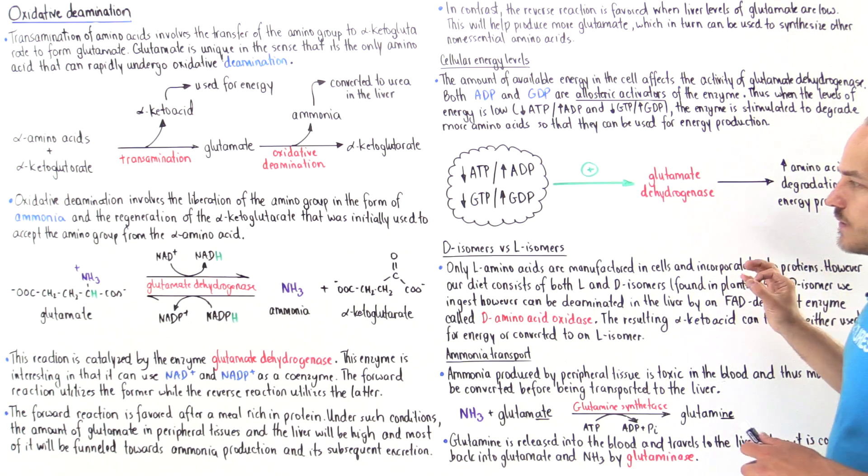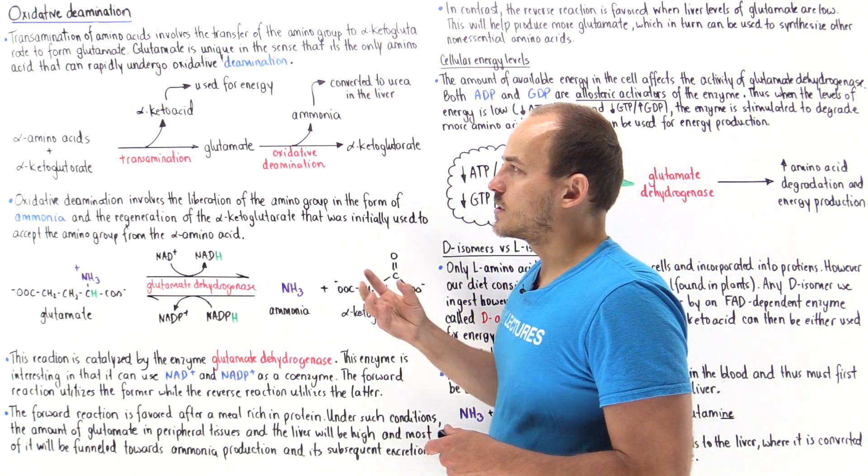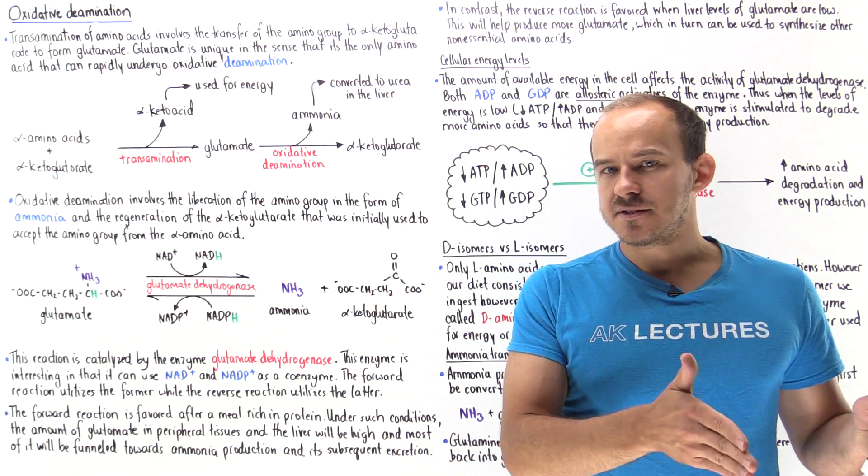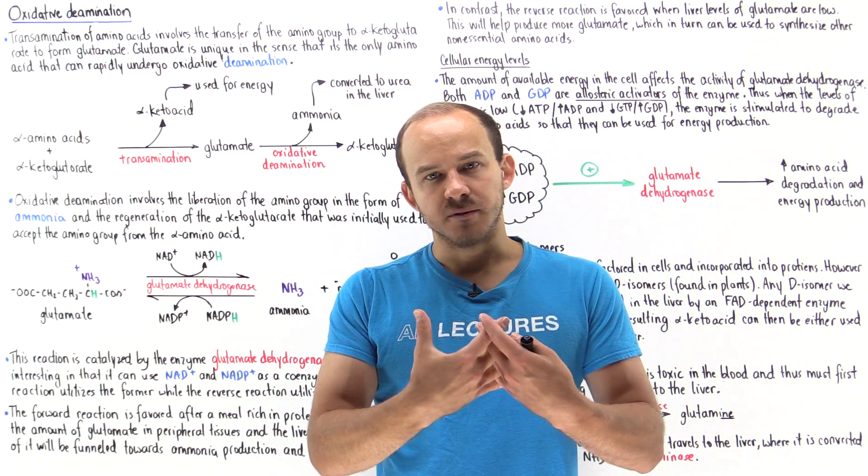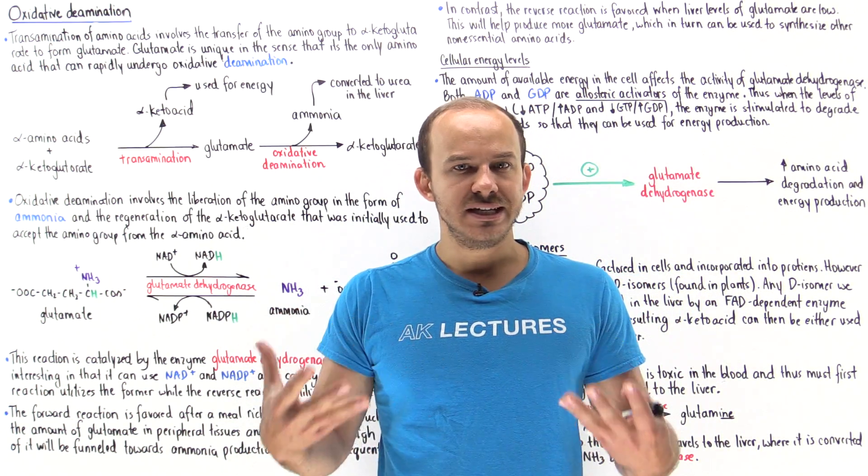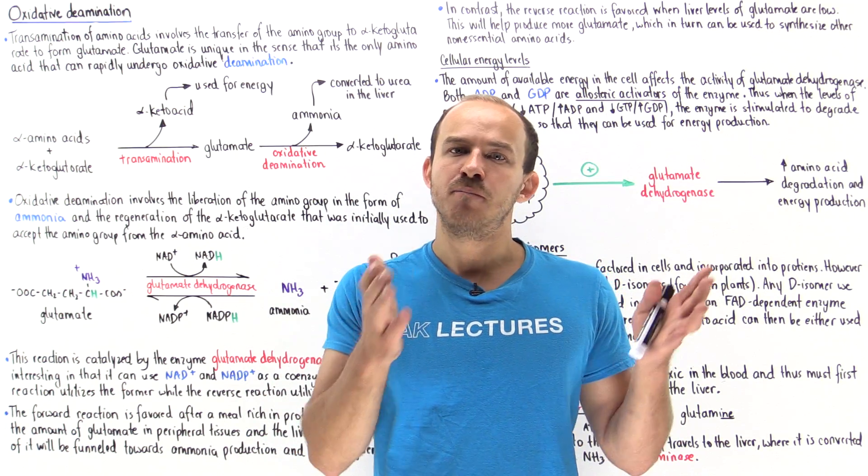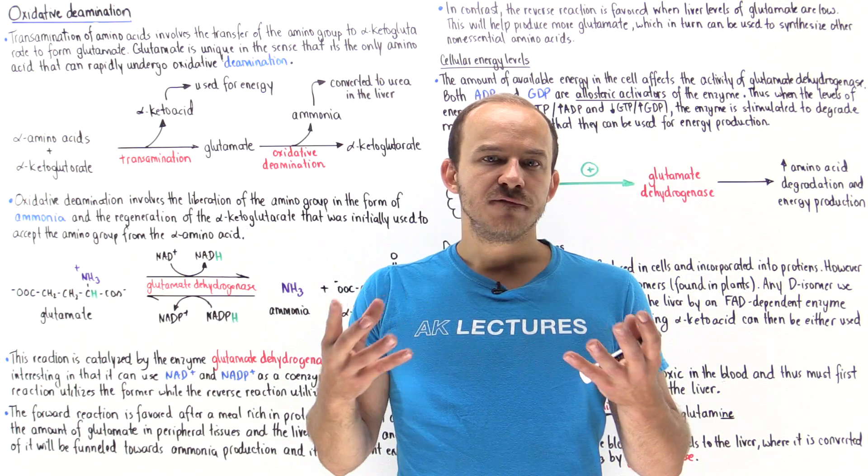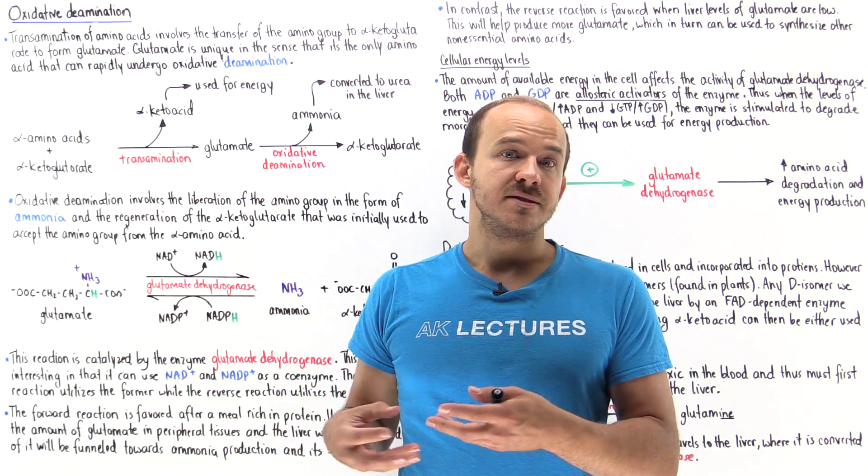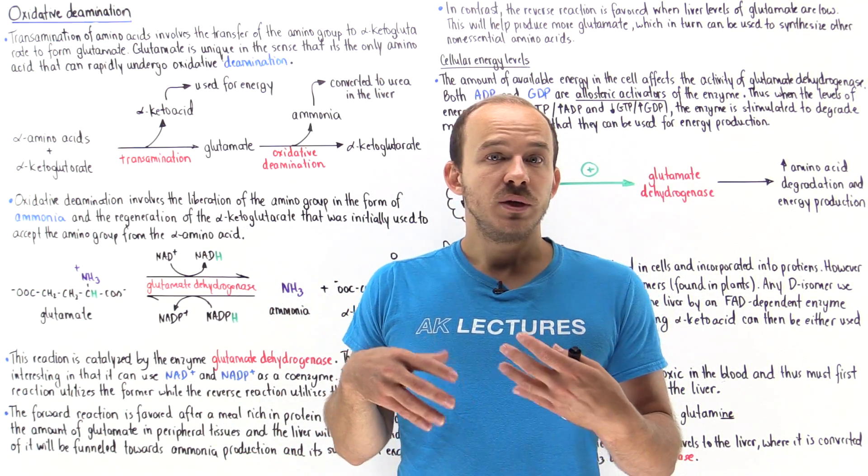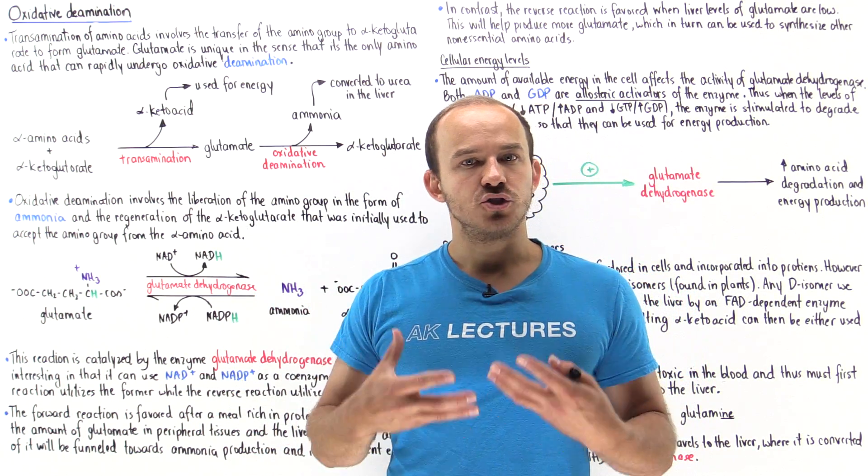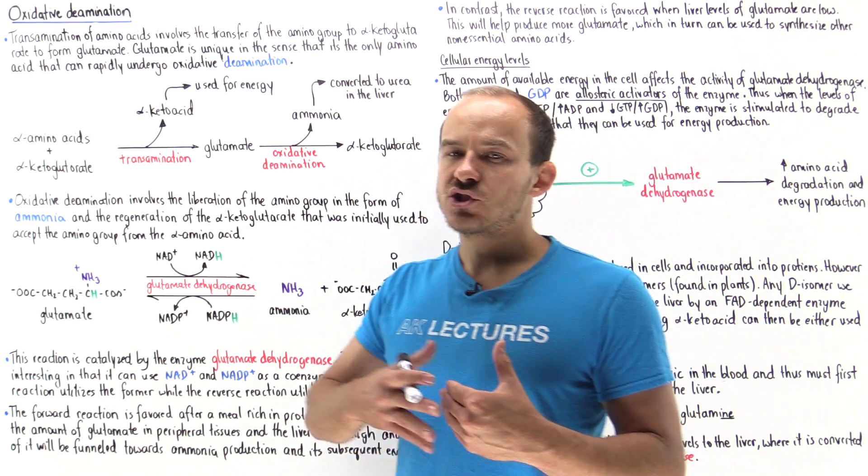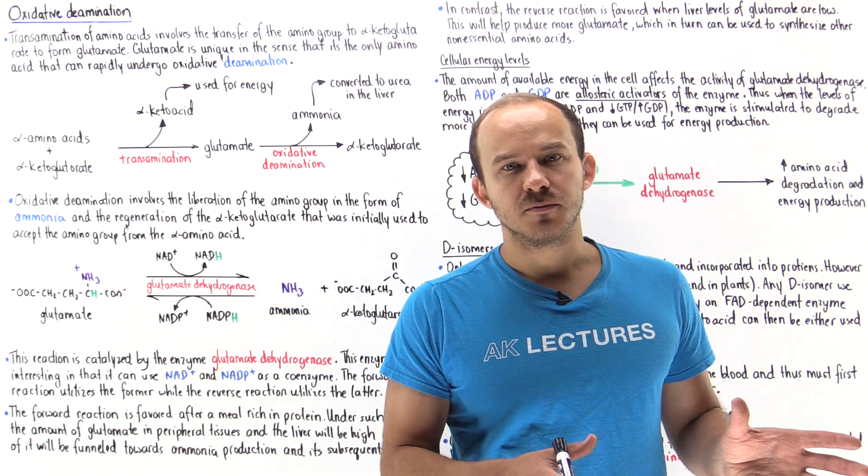Now I want to briefly talk about D isomers and L isomers. Remember the cells of our body only use L isomers of amino acids to incorporate them into proteins. They don't actually use D isomers. Yet our diet consists of both L isomers and D isomers. D isomers are found in places like plants. If we eat a plant-based diet we're ingesting a bunch of D isomers. That means our body has to have a way to actually convert the D isomers into L isomers.